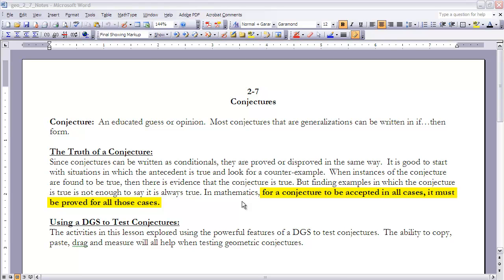Lastly, let's look at using a DGS to test conjectures. There's going to be a bunch of activities that we're going to do in class. In this lesson, we're going to explore using DGS to test conjectures. The ability to copy, paste, drag, and measure will help us in testing geometric conjectures. When you're trying to test a conjecture, it might be helpful to use that calculator to look for counter examples especially.